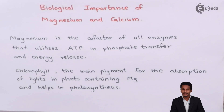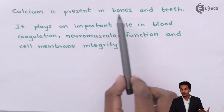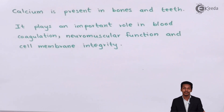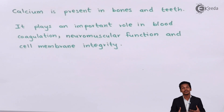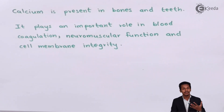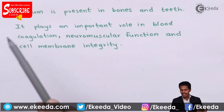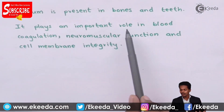Now let us move on to the importance of calcium. As we know, calcium is present in bones and teeth, and that is the main component for which we consume different kinds of medicines that can increase the calcium in our body and bones so as to strengthen them. Calcium plays a very important role in the formation of bones.